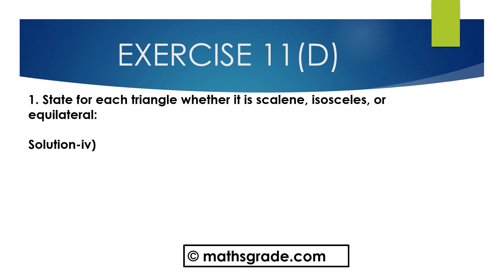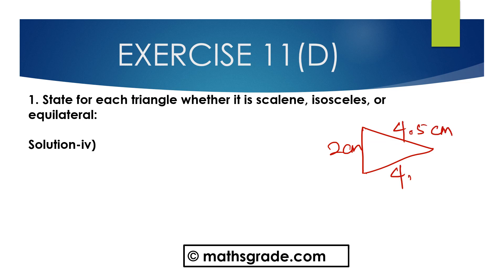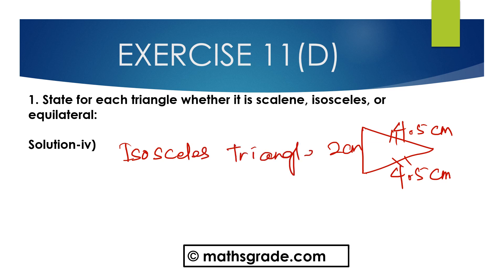Now Question No. 4. First, draw the given figure. This triangle is given with sides 2 cm, 2 cm, 4.5 cm, and 4.5 cm. In this triangle, two sides are equal, that is 4.5 cm. We know any triangle whose two sides are equal is said to be an isosceles triangle. So this is an isosceles triangle.